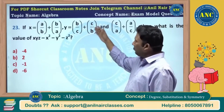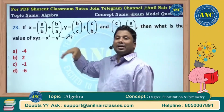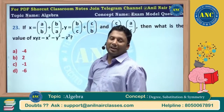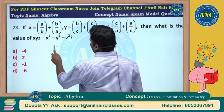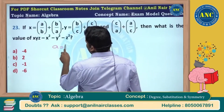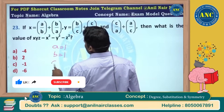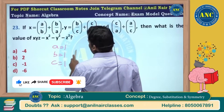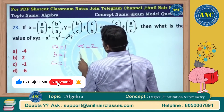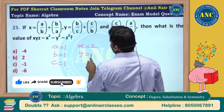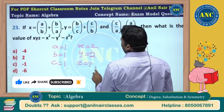a by b, b by a, b by c, c by a. Denominator variables are present, so they cannot take 0. So a value 1, b value 1, c value 1. So x will be 2, y will be 2, and z will be 2.